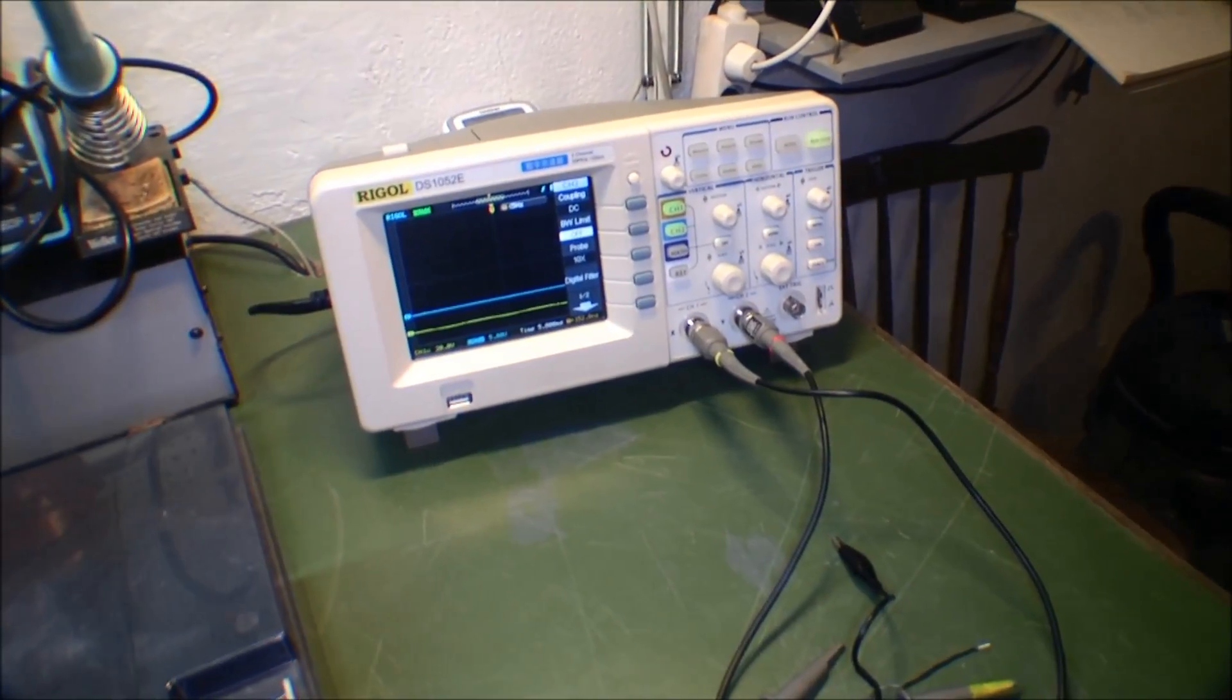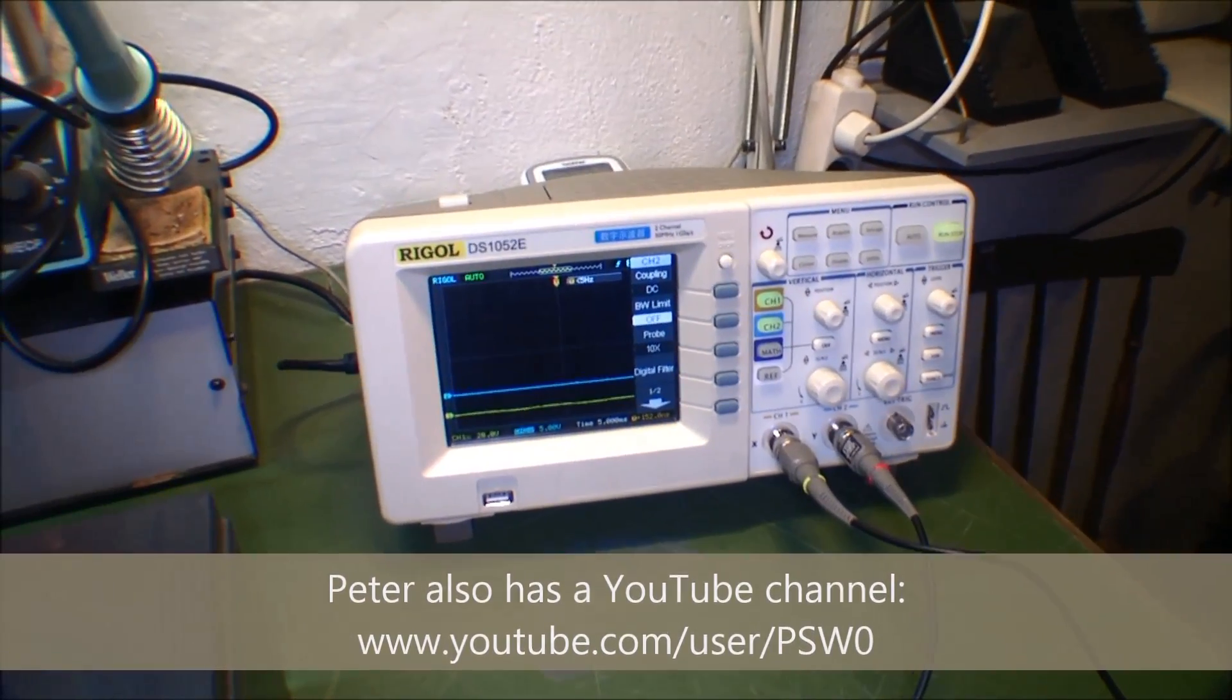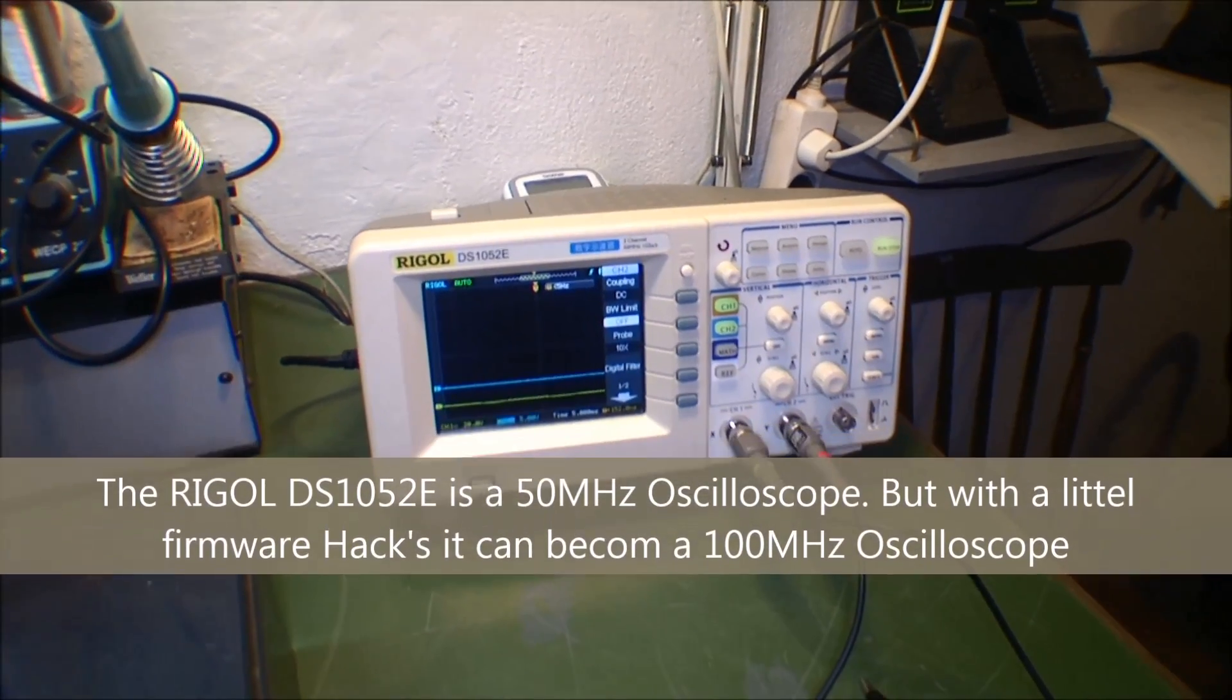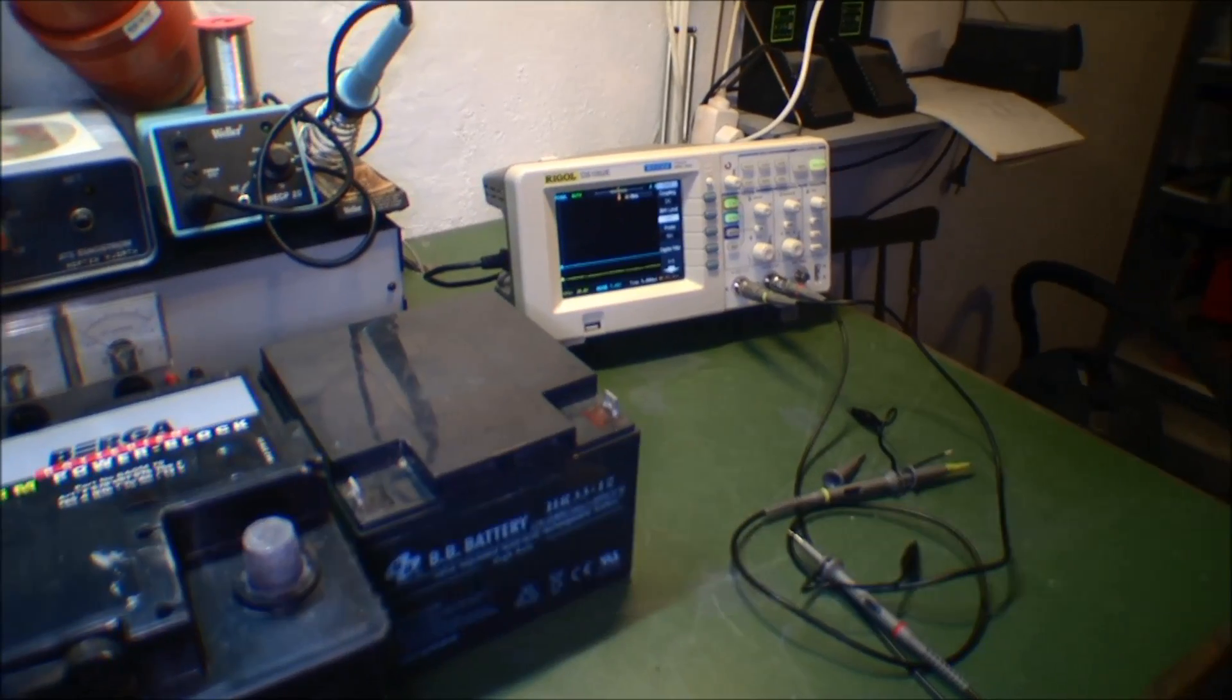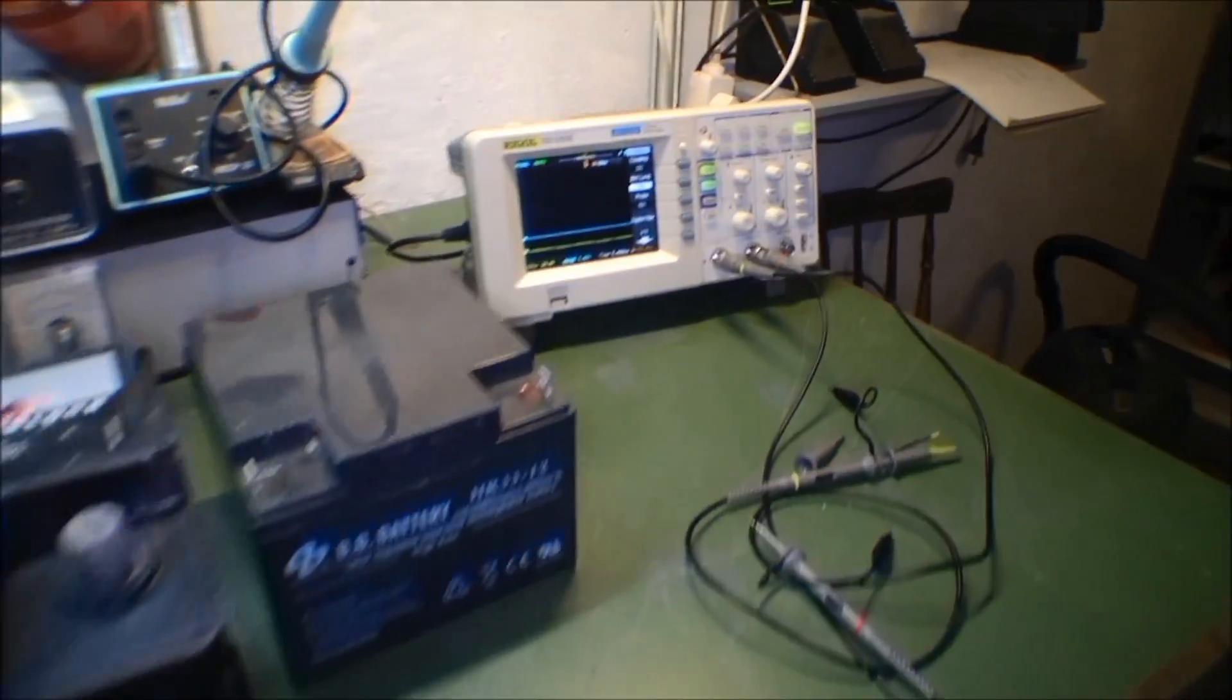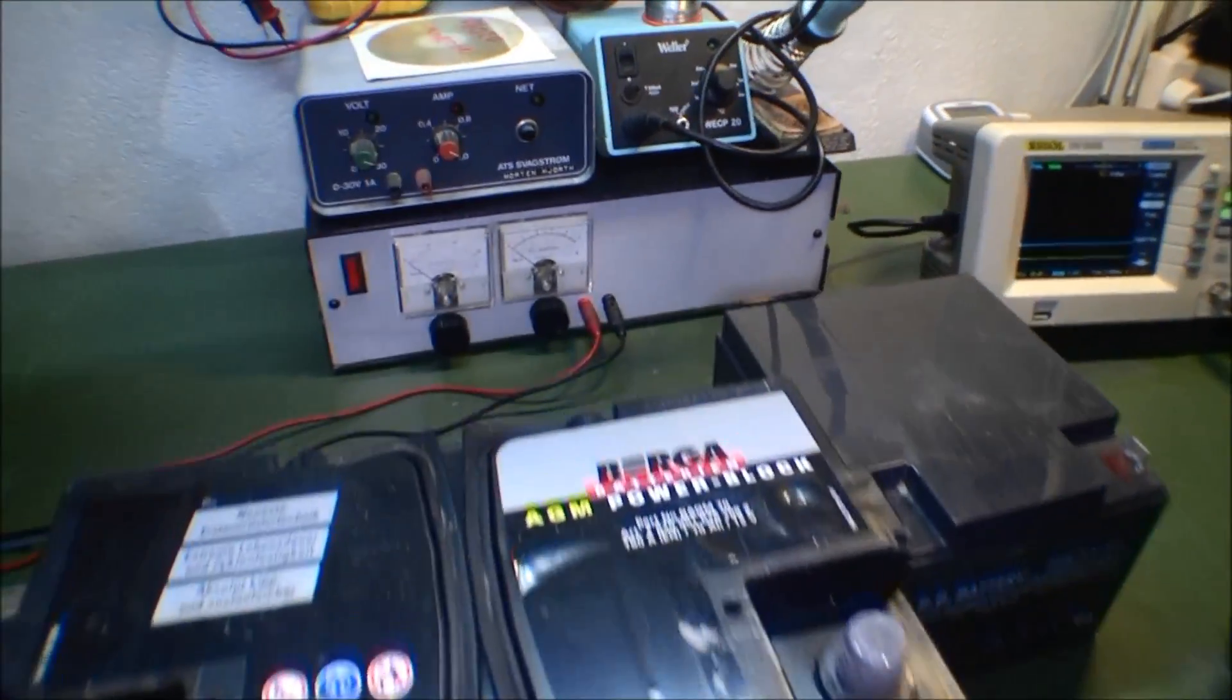My other cousin Peter has brought a Rigol DS1052e oscilloscope. That's the oscilloscope that you can hack. He hasn't done it yet, which is really weird. You can actually hack most of Rigol's oscilloscopes.